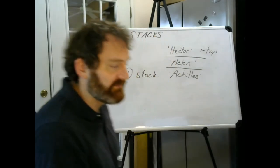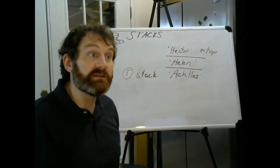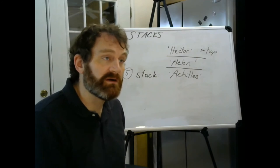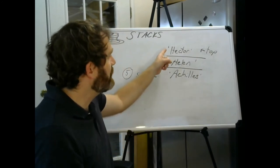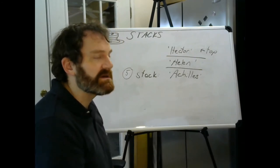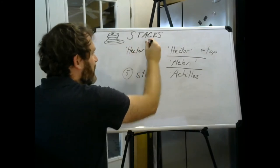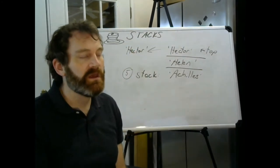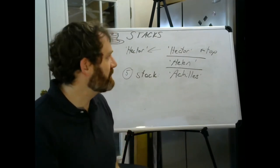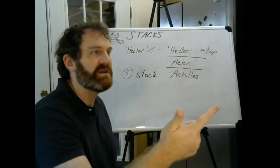Step five, stack dot peek. What does peeking do on a stack? Peeking just says: tell me who's on top — tell me that value. So when I peek, I get the value Hector back because he is the top of the stack. But Hector is not removed from the stack — we're just looking. Push and peek — that's what we've looked at.